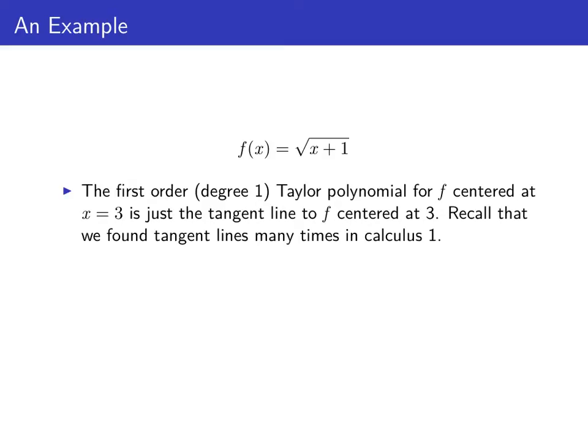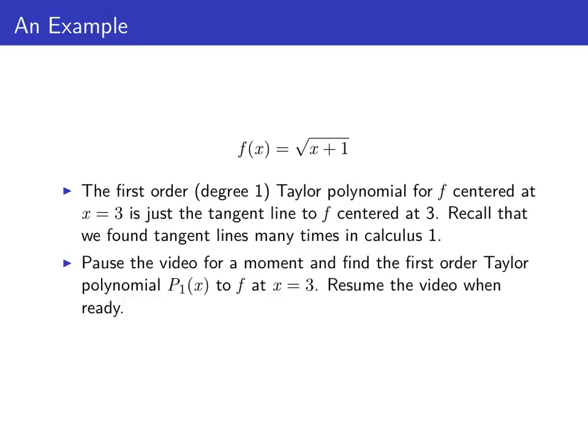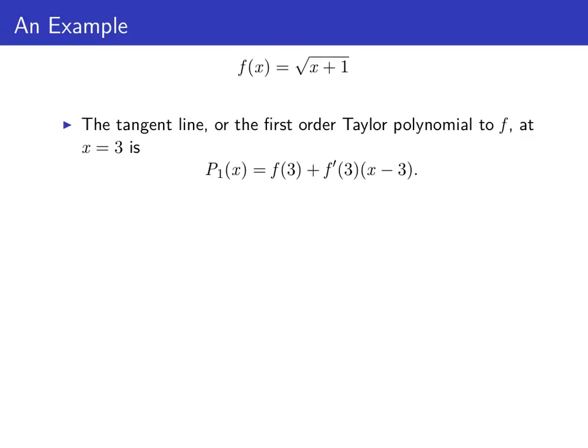The first order or degree one Taylor polynomial for a function is just the tangent line, and we've calculated tangent lines many times. Let's pause the video for a moment and find the first order Taylor polynomial p sub one of x to this function f at x equals three. The tangent line, or first order Taylor polynomial, to f at x equals three is p sub one of x equals f of three plus f prime of three times x minus three.